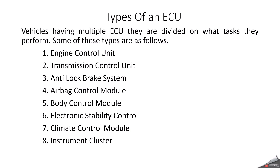The airbag control module manages the airbag system, which inflates the airbags during a collision to protect occupants. The body control unit controls various body functions such as lighting, HVAC, door locks and power windows. The electronic stability control module manages vehicle stability by selectively applying brakes to individual wheels and reducing engine power during a loss of traction. The climate control module controls the HVAC system and maintains the desired temperature inside the vehicle. The instrument cluster displays vital information such as speed, fuel level and engine RPM.